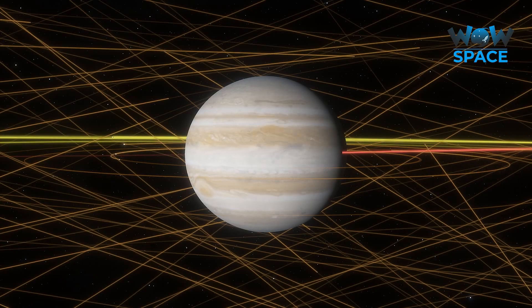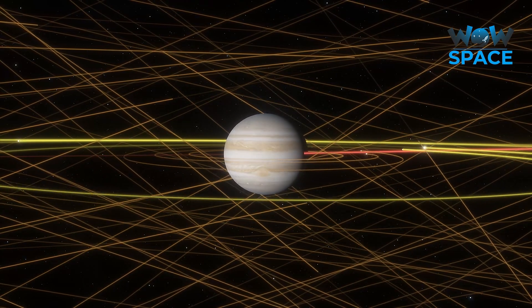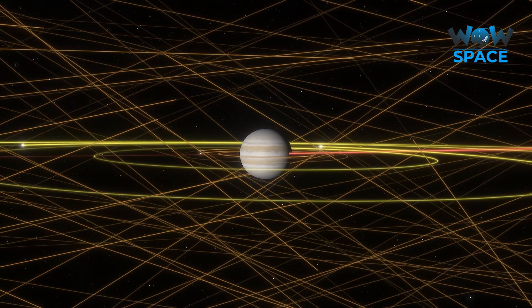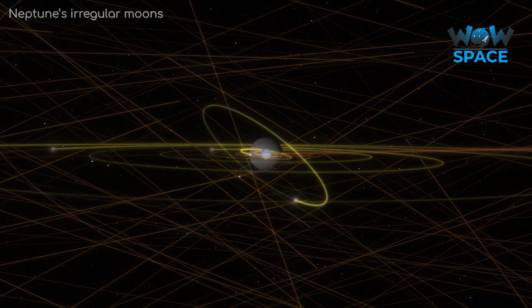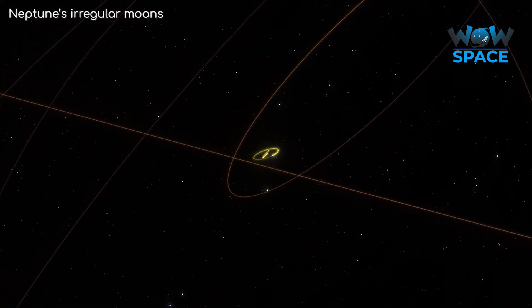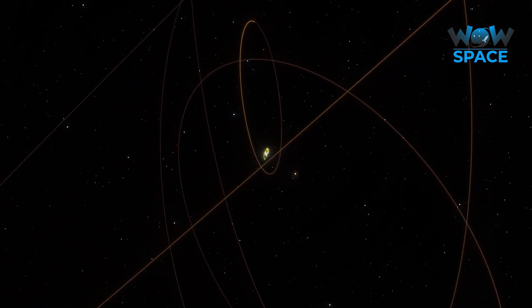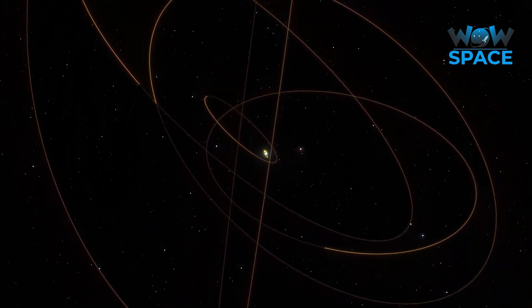And now you can see why these gas giants have so many captured moons. Their hill spheres are simply much bigger all the way out there. In fact, Neptune, while not being anywhere near as massive as Jupiter, has a much bigger hill sphere, meaning it can capture stray asteroids which are tens of millions of kilometres away.